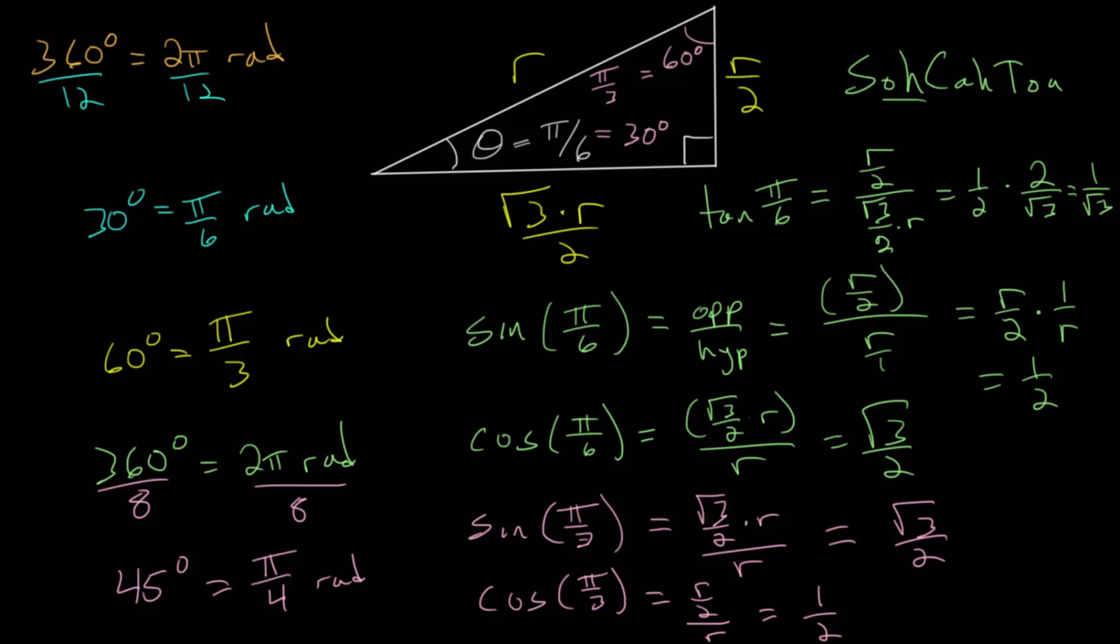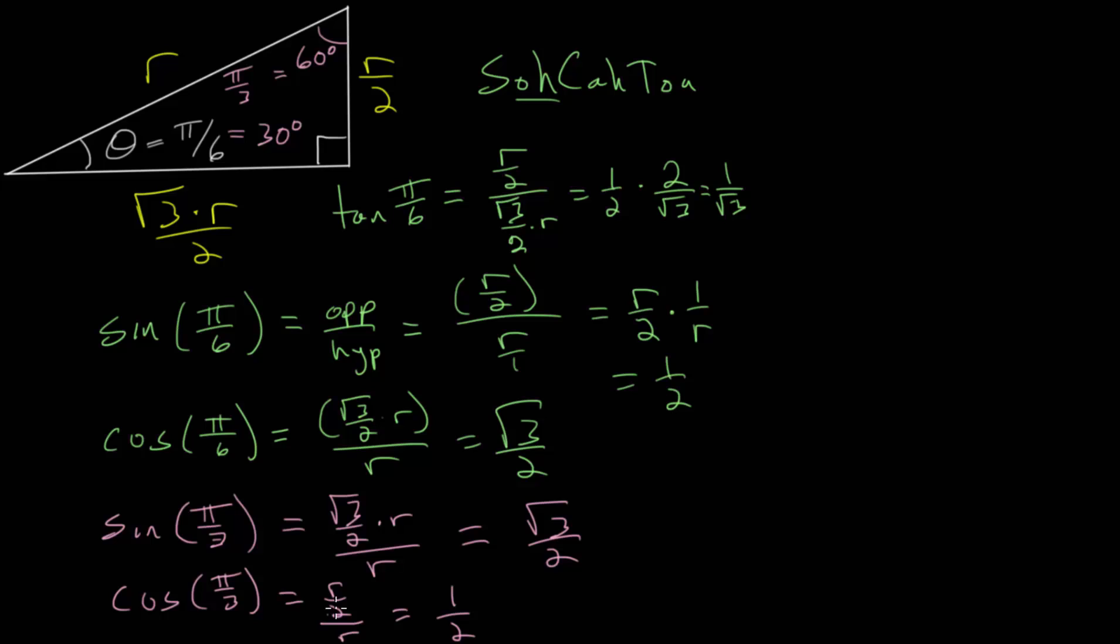If we rationalize this denominator, we can multiply top and bottom by the square root of 3 so that we get root 3 over 3.